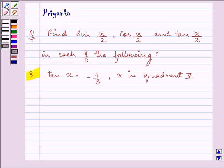Here we are given the value that is tan x equals minus 4/3, where x lies in the second quadrant.